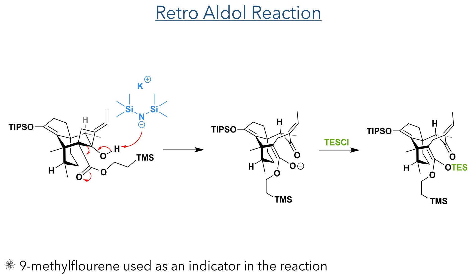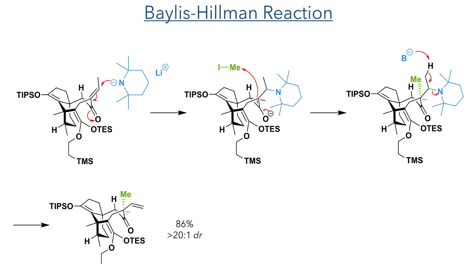In the next step, this cyclobutanol took part in a retro-aldol reaction. The cyclobutanol was deprotonated with KHMDS, forming a ketone upon fragmentation of the cyclobutane ring, together with a ketene acetal that was trapped with TES chloride. This reaction required precisely one equivalent of base; 9-methylfluorene was added as an indicator, forming a persistent pink colour once the equivalence point was reached. Lithium tetramethylpiperidine was then added, promoting a Baylis-Hillman-type reaction where TMP undergoes a Michael addition to the enol, forming an enolate that attacked iodomethane. Elimination of the TMP group forms an exo-alkene, completing the sequence in an 86% yield with greater than 20-to-1 dr.